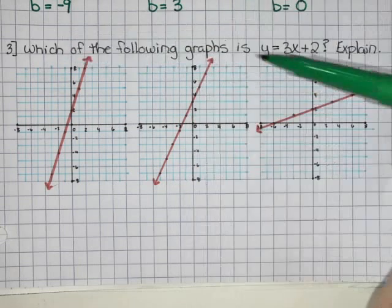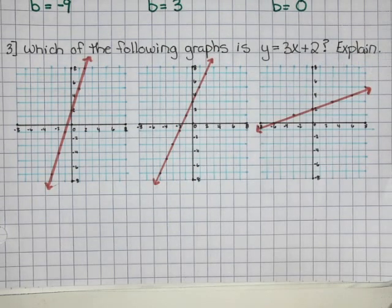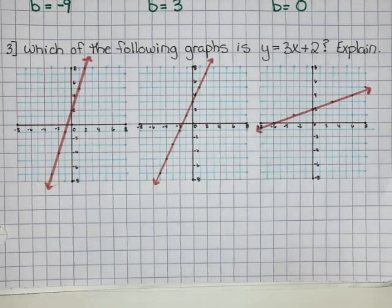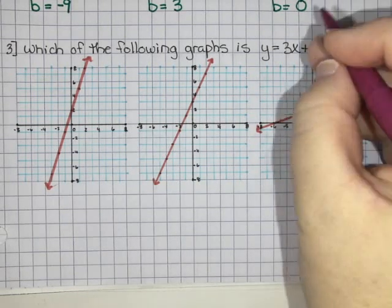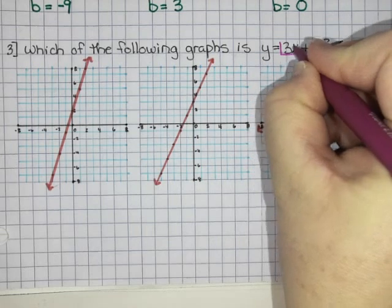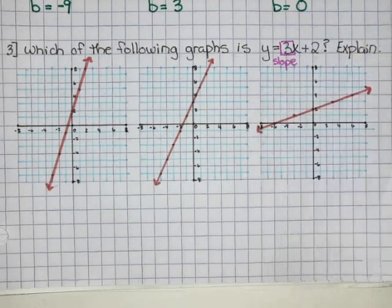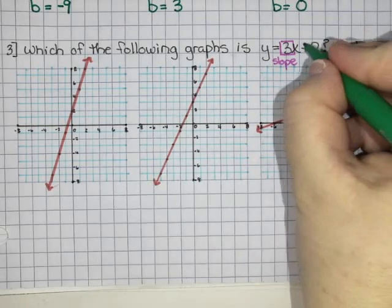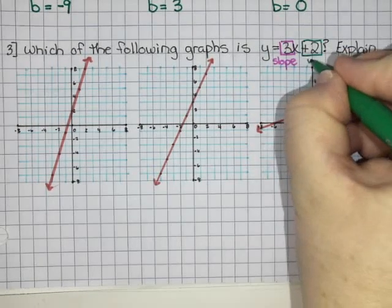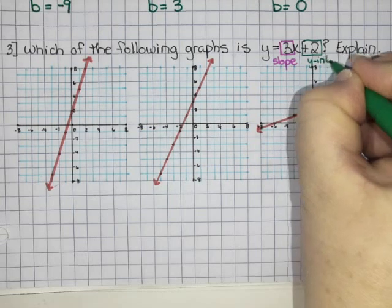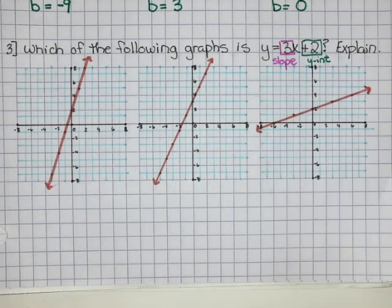We want to figure out which one is y = 3x + 2. We have learned that in the equation of a line, there are two parts: the part next to the x, which is the slope, and the part not next to the x, which is the y-intercept. The slope tells us how to get from one point to the next, and the y-intercept tells us where the line crosses the y-axis.